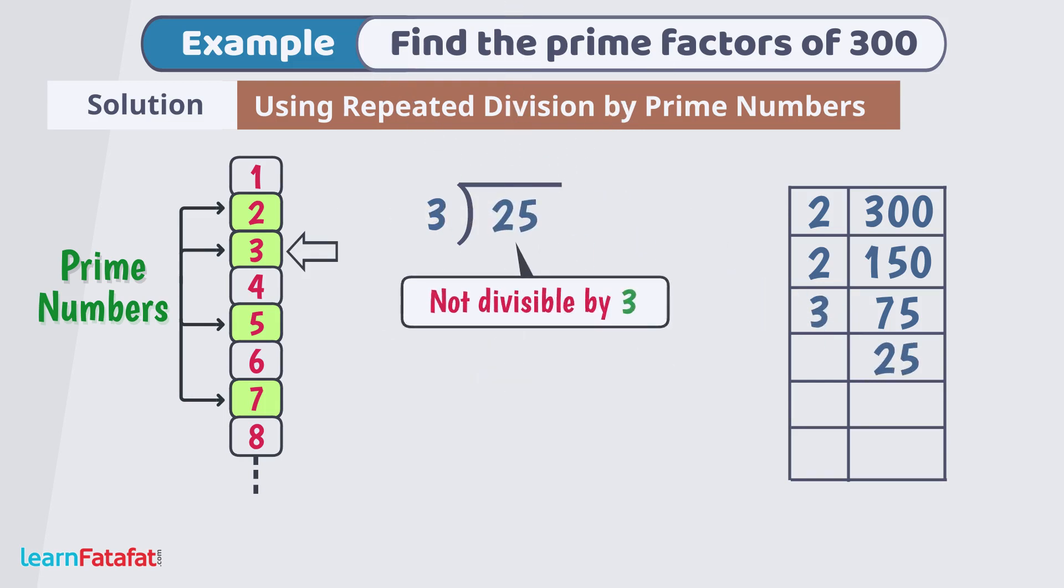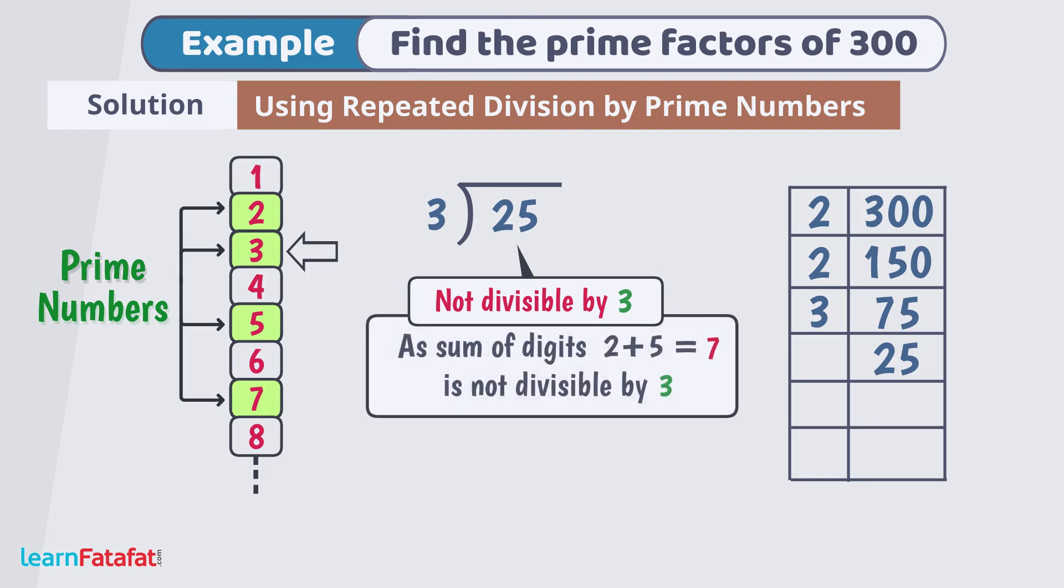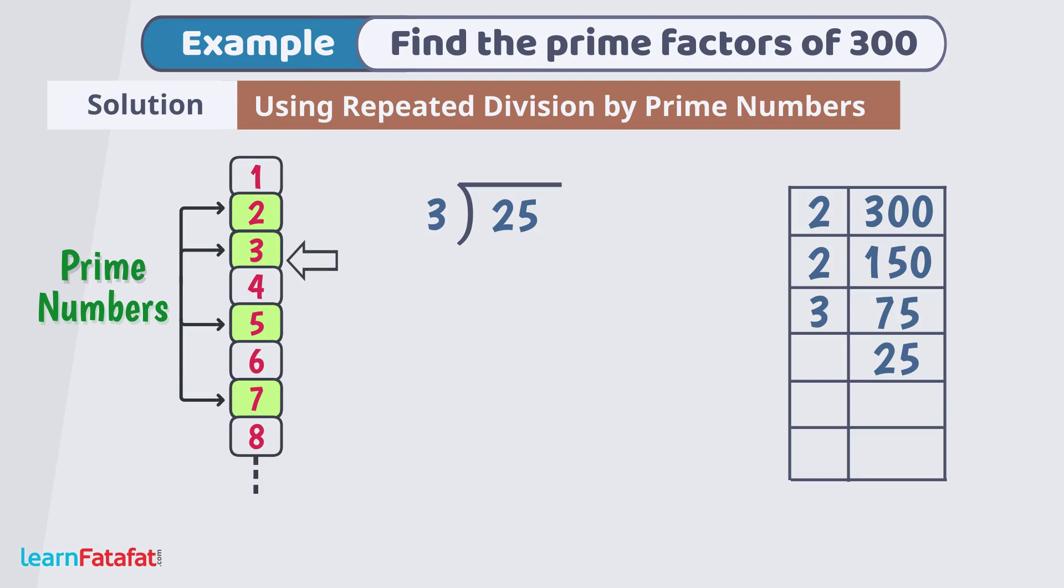25 is not divisible by 3 as sum of digit 2 plus 5 equals to 7 is not divisible by 3. Next prime number is 5. 25 divided by 5 equals to 5. So, write divisor 5 here and quotient 5 here.